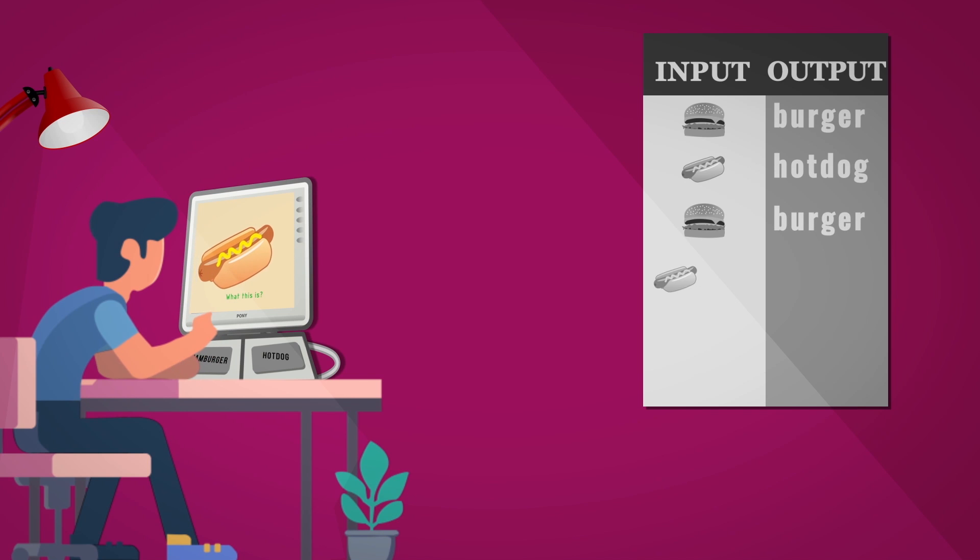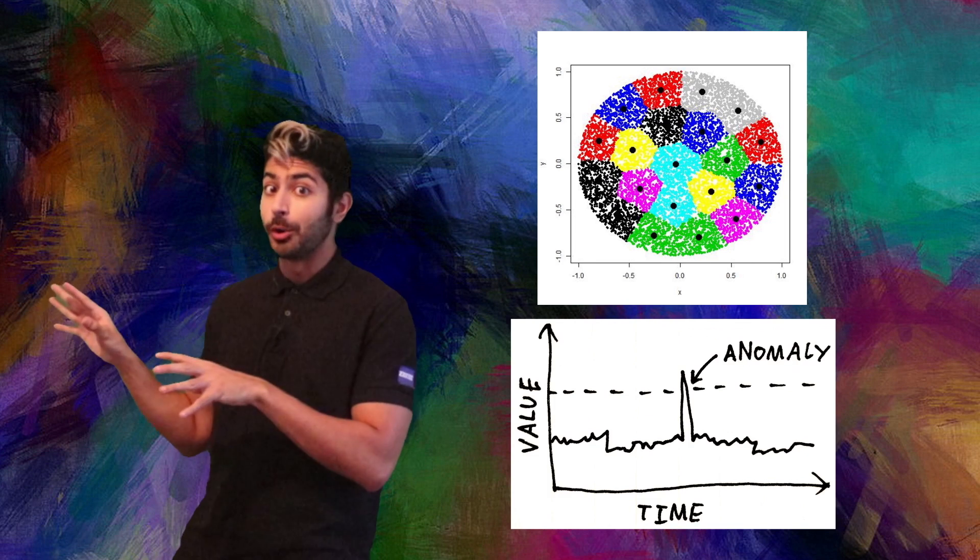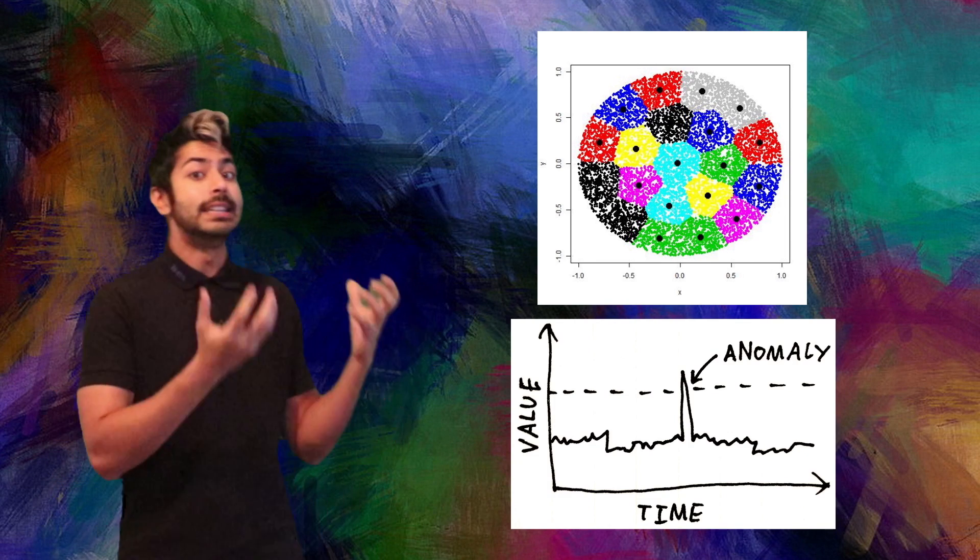But ideally we don't need labels, we can just train our algorithms on unlabeled data since the vast majority of the world's data does not in fact have labels. So if we want to train algorithms unsupervised, meaning no labels, then we can use techniques like clustering and anomaly detection.